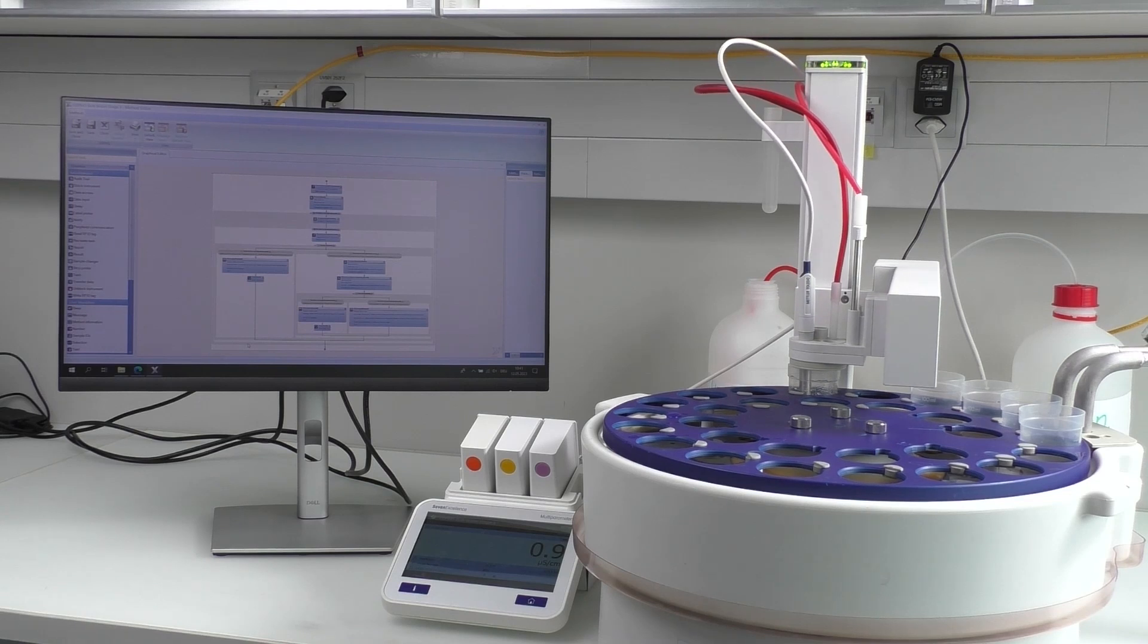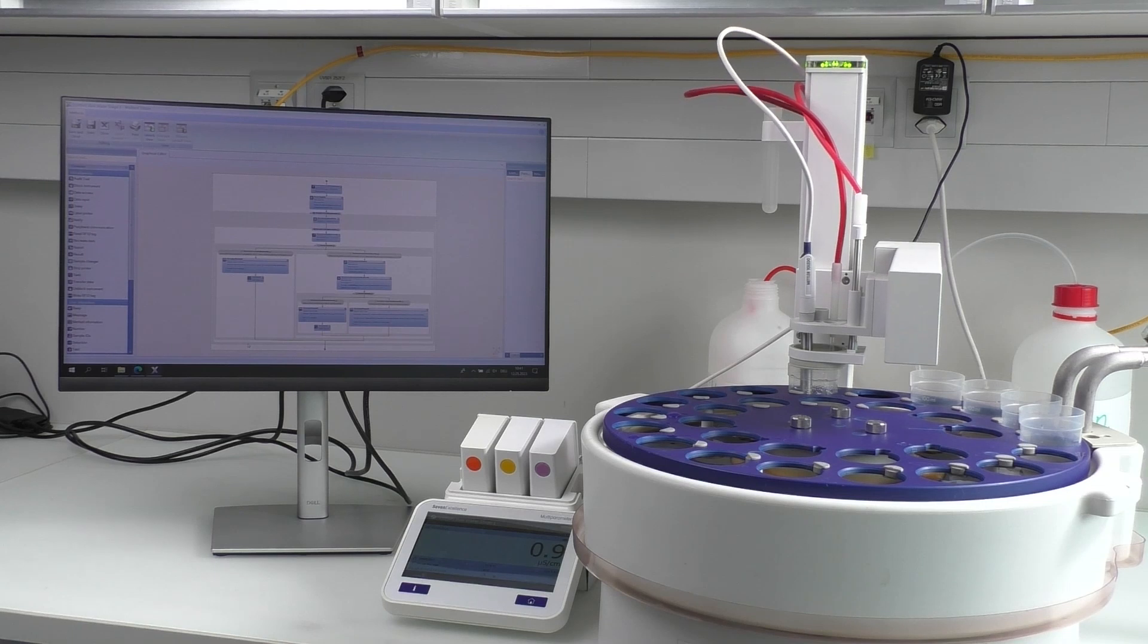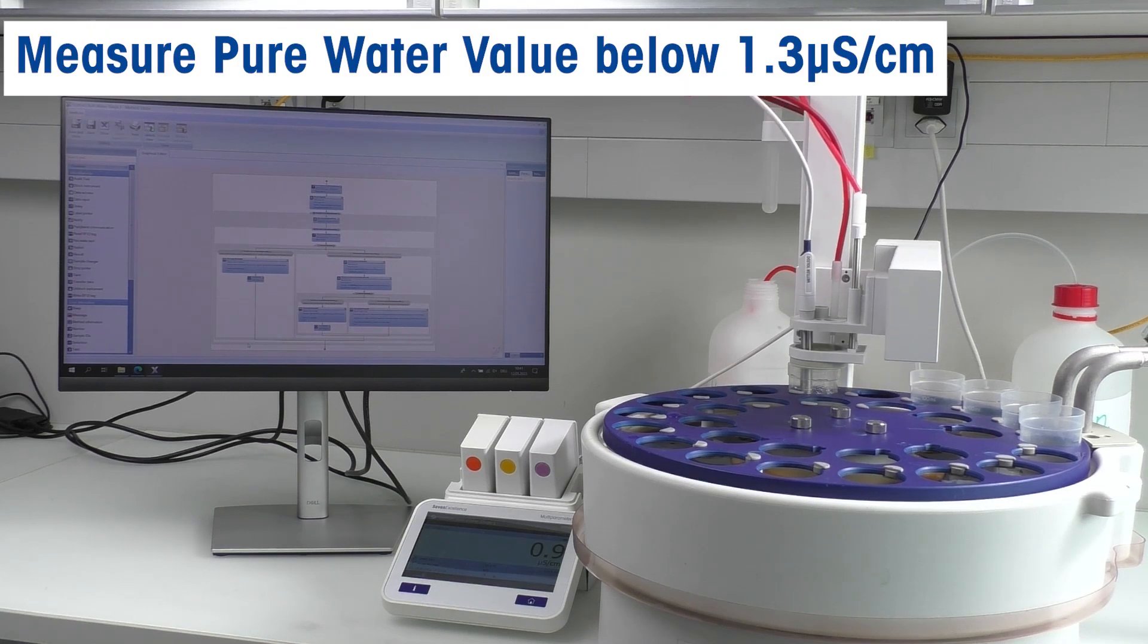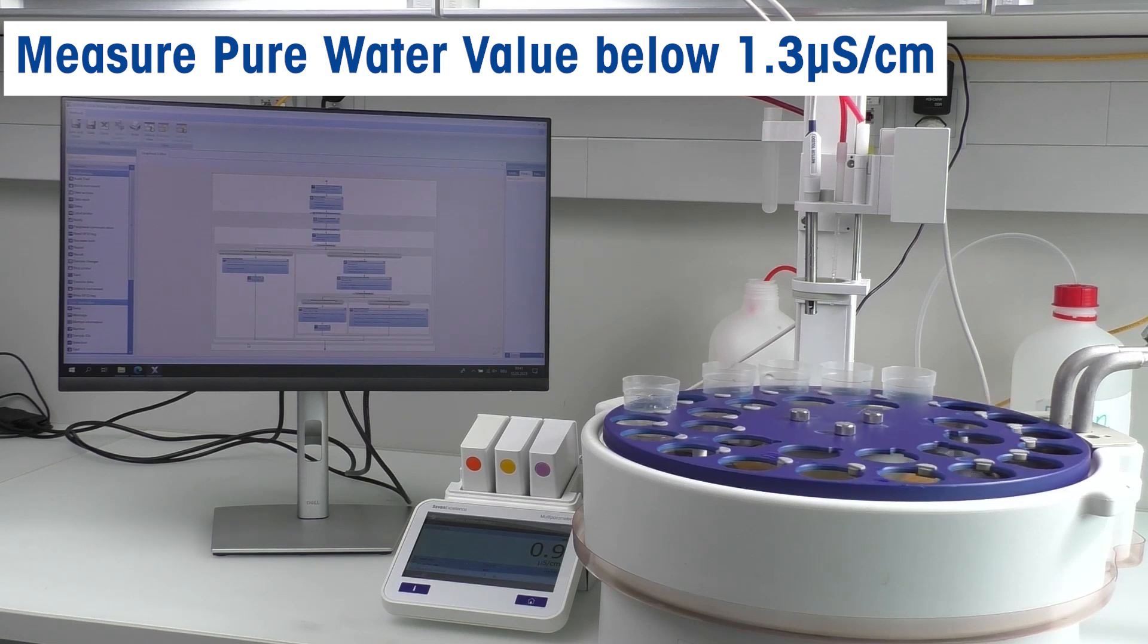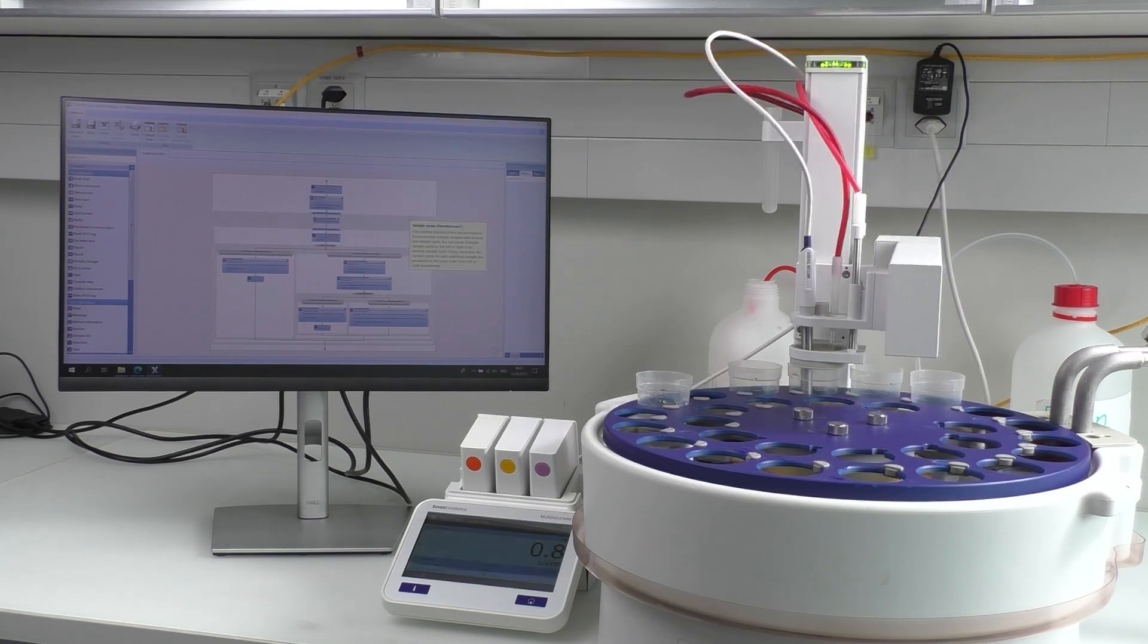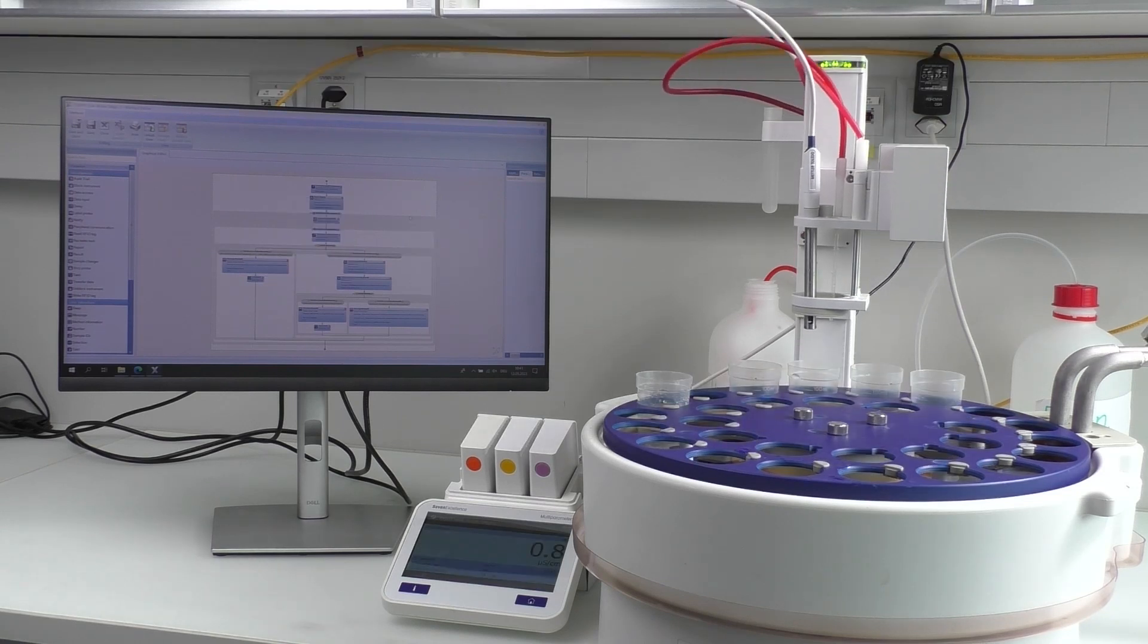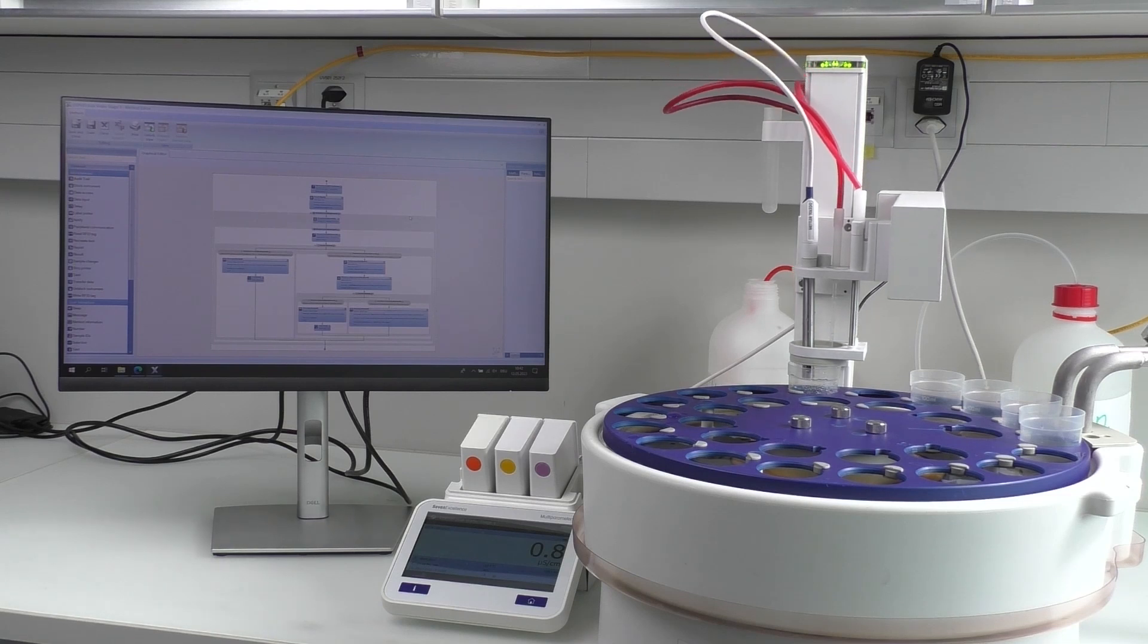In order to be compliant with USP645, the conductivity limit should not exceed 1.3 microsiemens per centimeter at the temperature of 25 degrees Celsius. Using the water bath, we can maintain a constant temperature. The InMotion will automatically move from sample to sample, and PowerShower cleans the conductivity sensor before the next measurement.